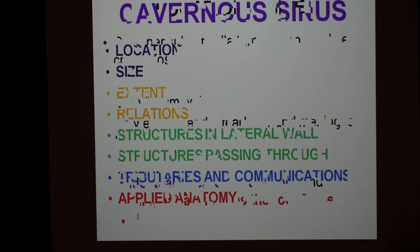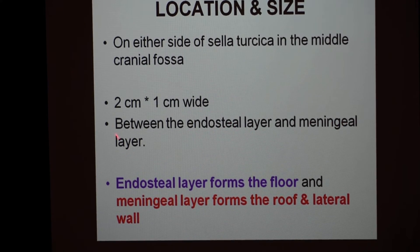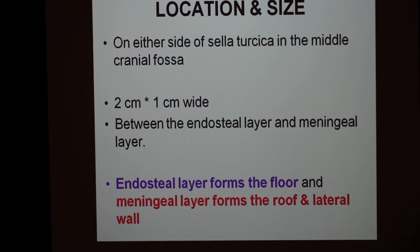The location: the cavernous sinuses are present on either side of the sella turcica, that is the pituitary fossa, in the middle cranial fossa. The size is approximately 2 by 1 cm on each side. They are present between the endosteal layer and the meningeal layer of the dura mater, where the endosteal layer forms the floor of the cavernous sinus, the meningeal layer forms the roof as well as the lateral wall, and the part of the roof which extends over the pituitary fossa continues with the diaphragma sellae.